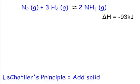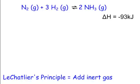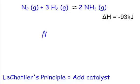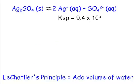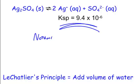Adding a solid — nothing happens, because solids are not included in the equilibrium expression. Adding an inert gas, something like a noble gas (helium, neon, or argon) — nothing happens, because they don't react with anything. Adding a catalyst — nothing happens either, because it increases the rate of the forward reaction but also increases the rate of the reverse reaction equally, so equilibrium is maintained. Finally, adding water to Ksp problems — nothing happens; it doesn't change the equilibrium or the concentration of X.